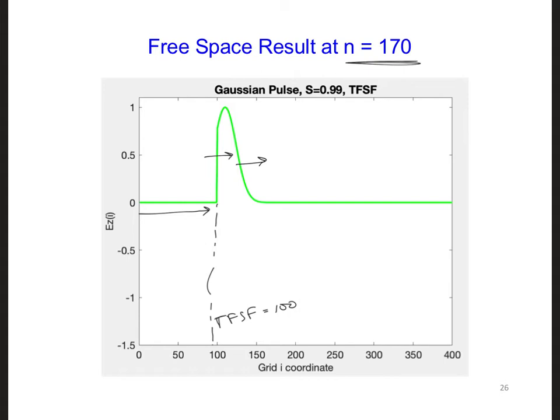Throughout the rest of the time steps, you hopefully saw this wave propagate all the way across the total field region. And then, at 300 here, it should have been subtracted out of the grid at this right total field scatter field interface.